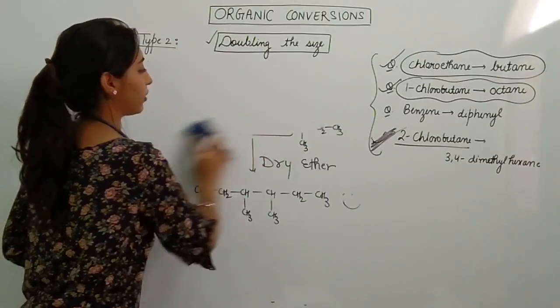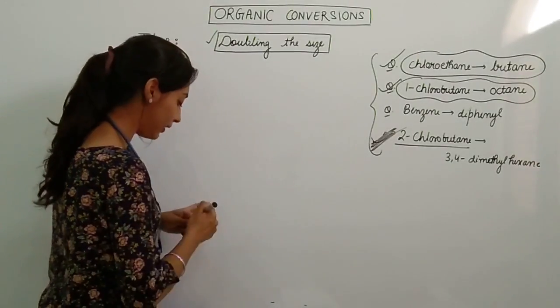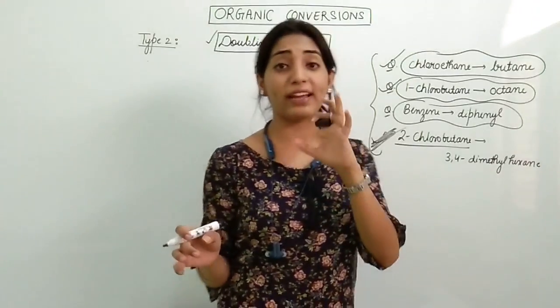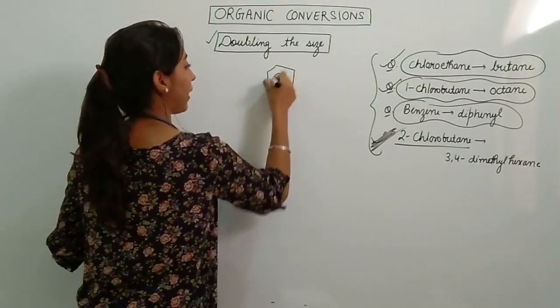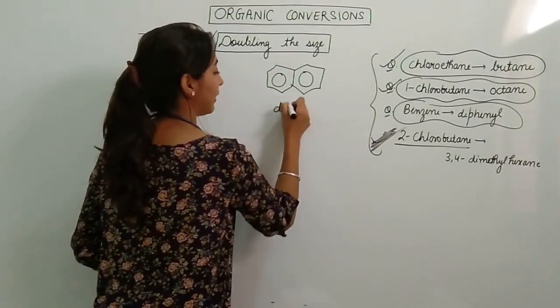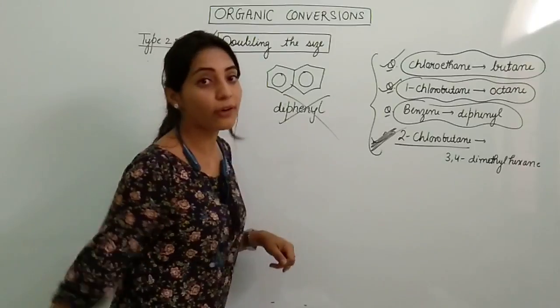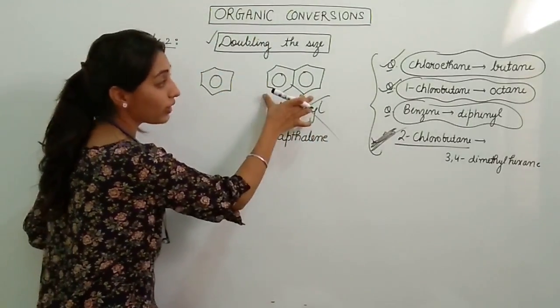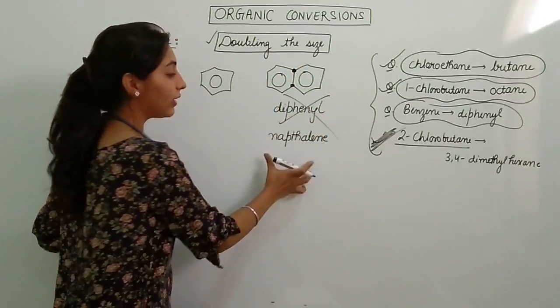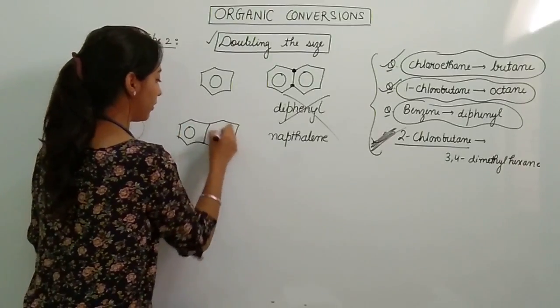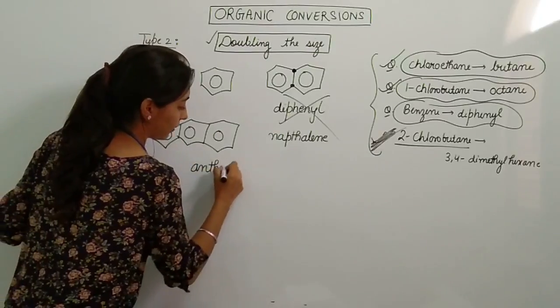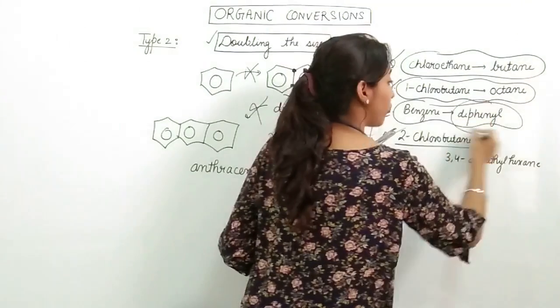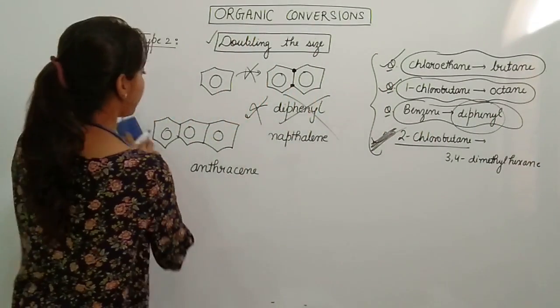Now let's talk about the last question of this time which is given in the chapter of haloalkanes and the question is, I have to convert benzene to diphenyl. First of all, many students have no idea how to write diphenyl. You know what they do? They're like, okay ma'am, this is benzene ring, this is another benzene ring. So they call it as diphenyl. This is wrong. This is not diphenyl. This is naphthalene.